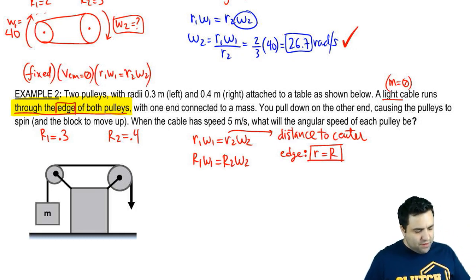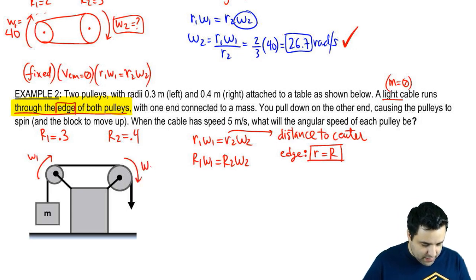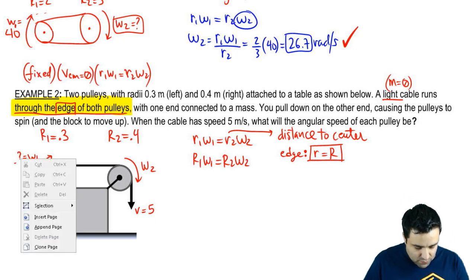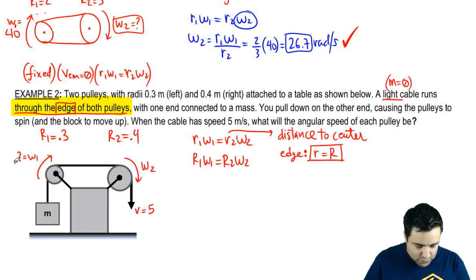It says you pull down the other end, causing the pulleys to spin. So if you pull down this way, this guy is going to spin with omega 1, and this guy is going to spin with omega 2. When the cable has a speed of 5 m/s, what is the angular speed of each? So when this cable has V equals 5, what is omega 1 and what is omega 2?